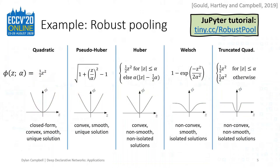Examples of potential robust penalty functions are shown in the table, with robustness increasing towards the right. So we can have Huber pooling and truncated quadratic pooling, all using the same framework. Since the forward and backward paths are decoupled in declarative layers, we can use any optimization algorithm to solve for the pooled value and still backpropagate efficiently through the layer. Notice that some of the penalty functions are non-convex. The declarative approach even allows for the use of non-differentiable algorithms such as RANSAC to optimize these objectives.